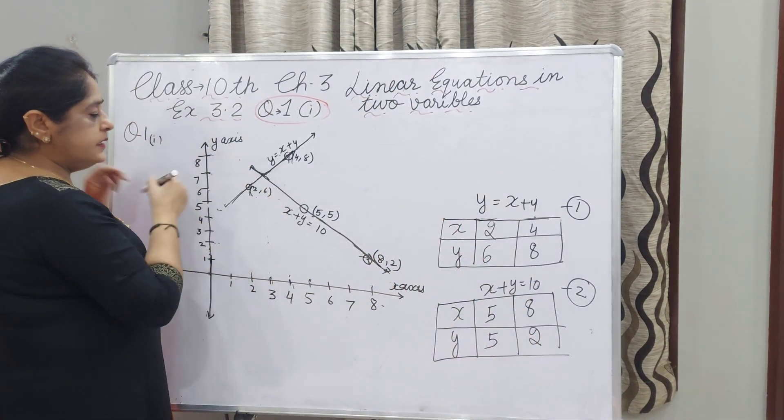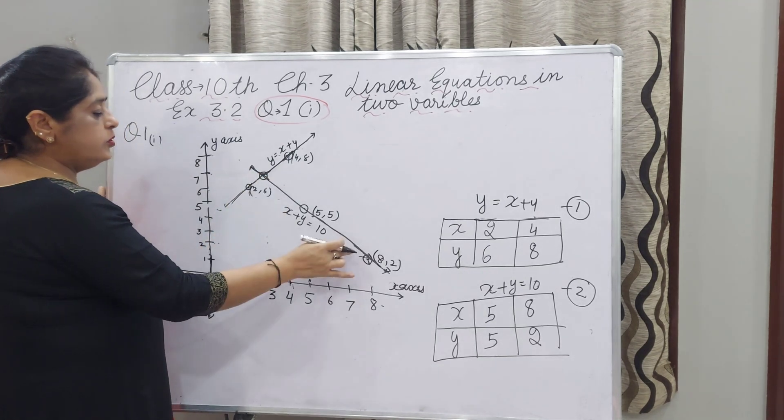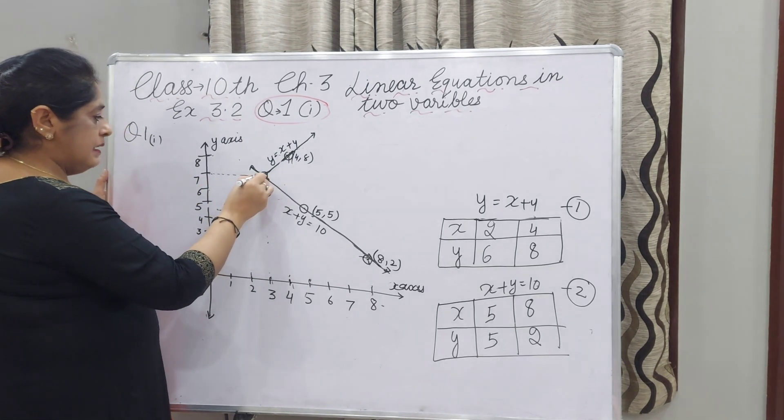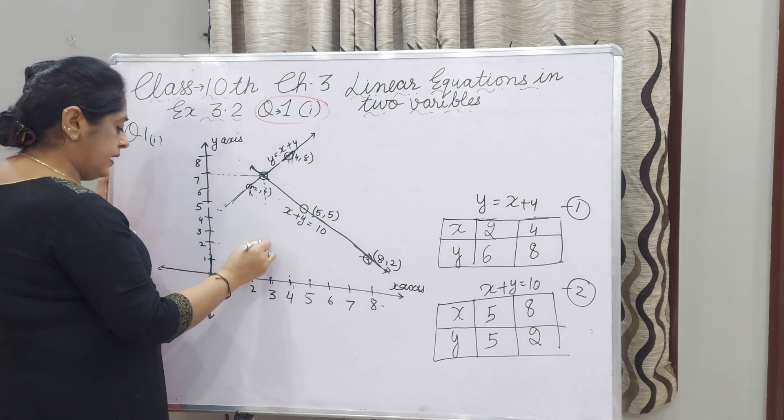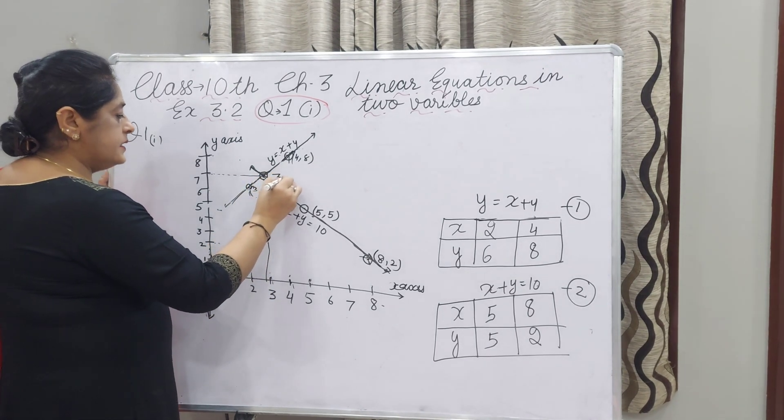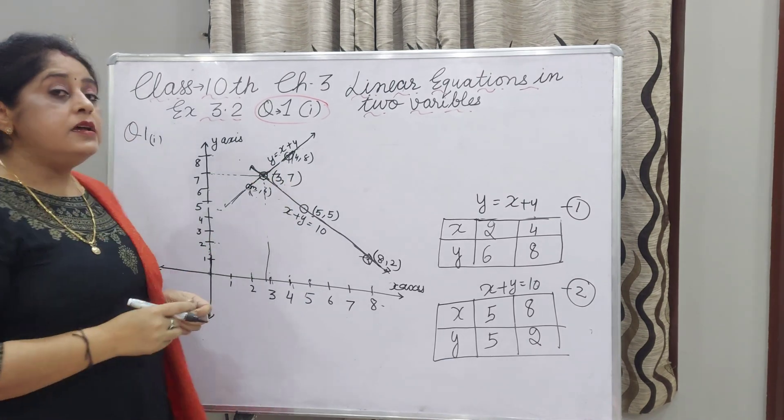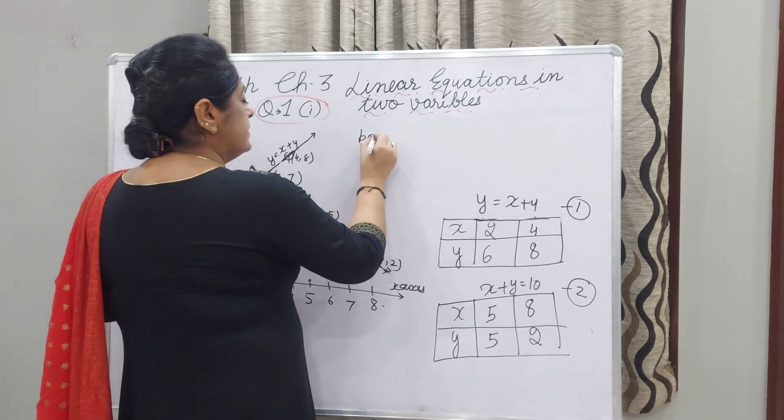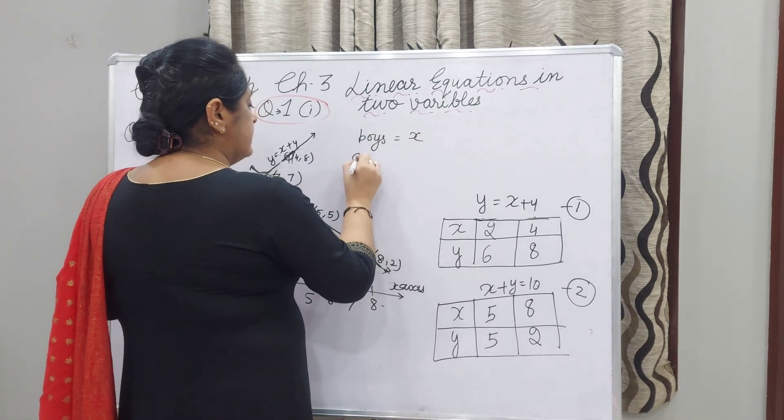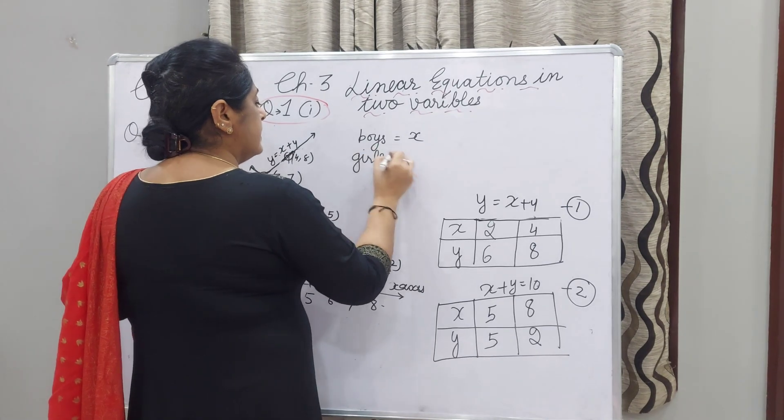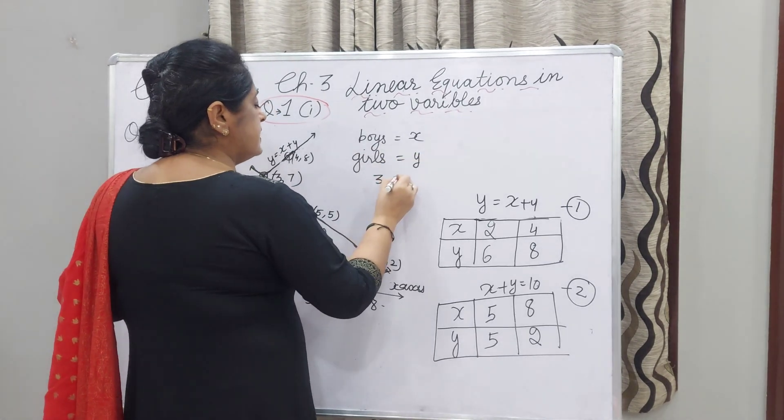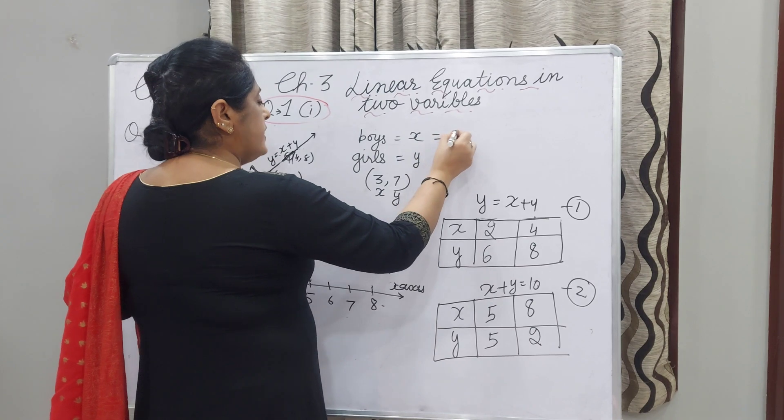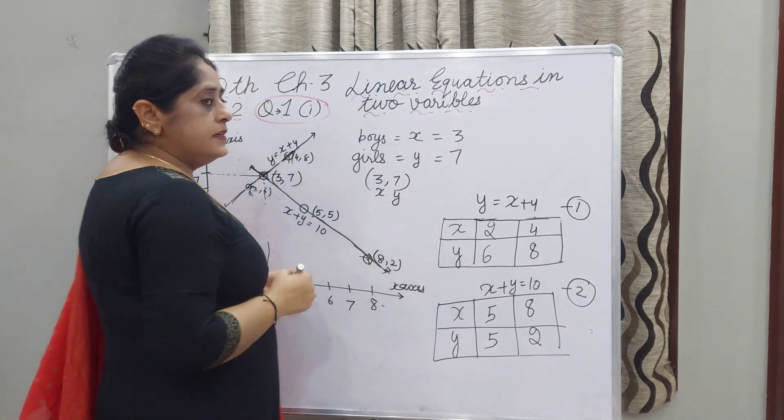Both these lines intersect at this point where the two lines are meeting. Check here: Y is 7 and X is 3. This is the solution of the equation. Since we assumed boys as X and girls as Y, the solution is 3, 7. This means boys are 3 and girls are 7.